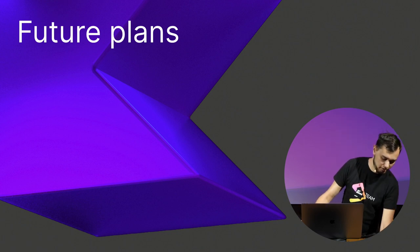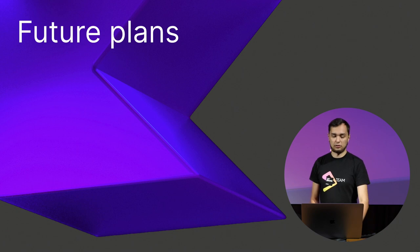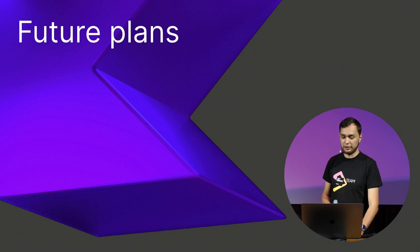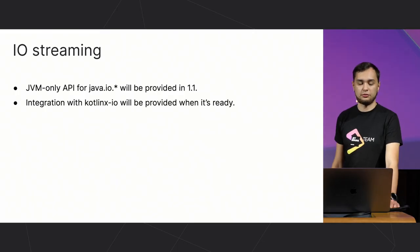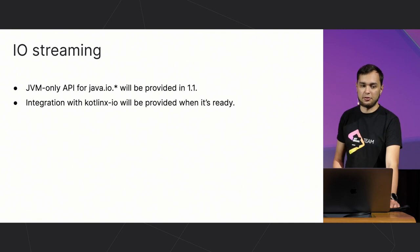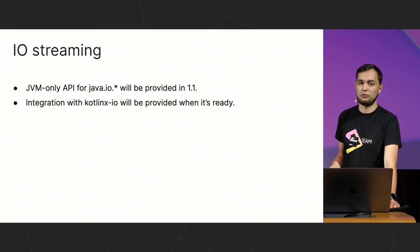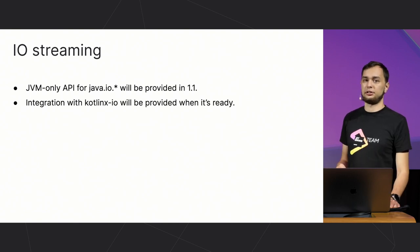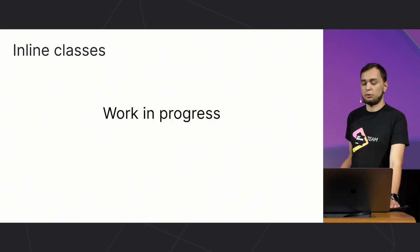We had more features — they are all presented in our changelog and guide. Now let's move to future plans, because we won't stop with the 1.0 release. One of the most requested features is IO streaming. We are going to provide a JVM-only API for Java IO streams in the next release, hopefully 1.1 if everything goes smoothly. Integration with kotlinx.io for multiplatform IO streaming will be provided when kotlinx.io is ready — it doesn't have a public stable release yet so we can't depend on it. For inline classes, we remember them, have some work in progress, so stay tuned.